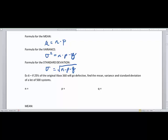So let's look at this example using these three formulas. If 25% of the original Xbox 360s went defective, let's find the mean and the variance and the standard deviation if we have a lot of 500 systems during their red ring of death phase. So let's just kind of go with this example. So the N in this case is going to be the lot of 500 systems. So this is our number of trials, so to speak.